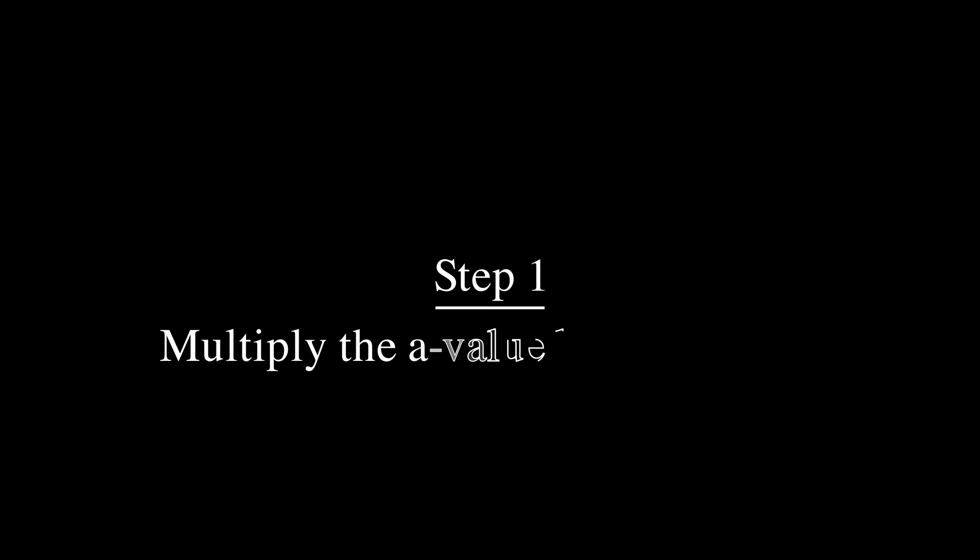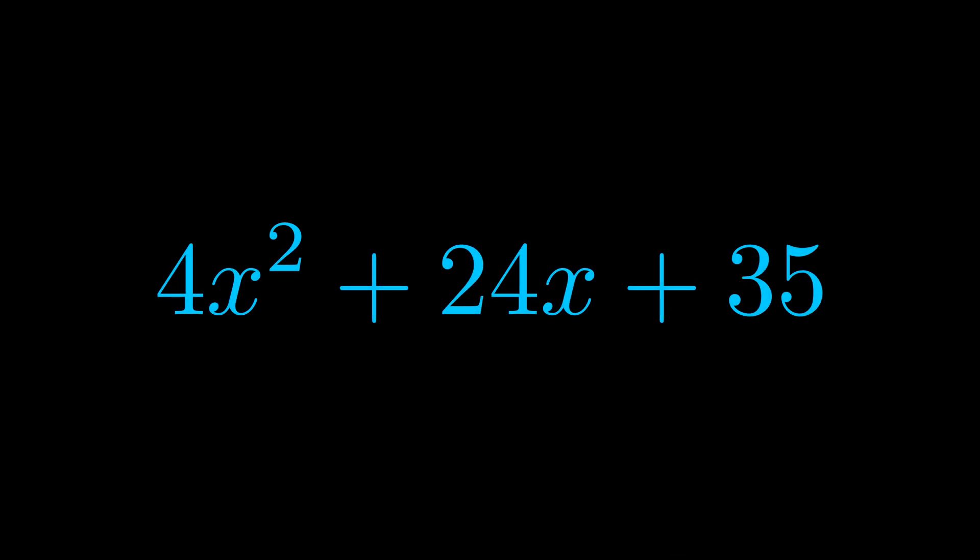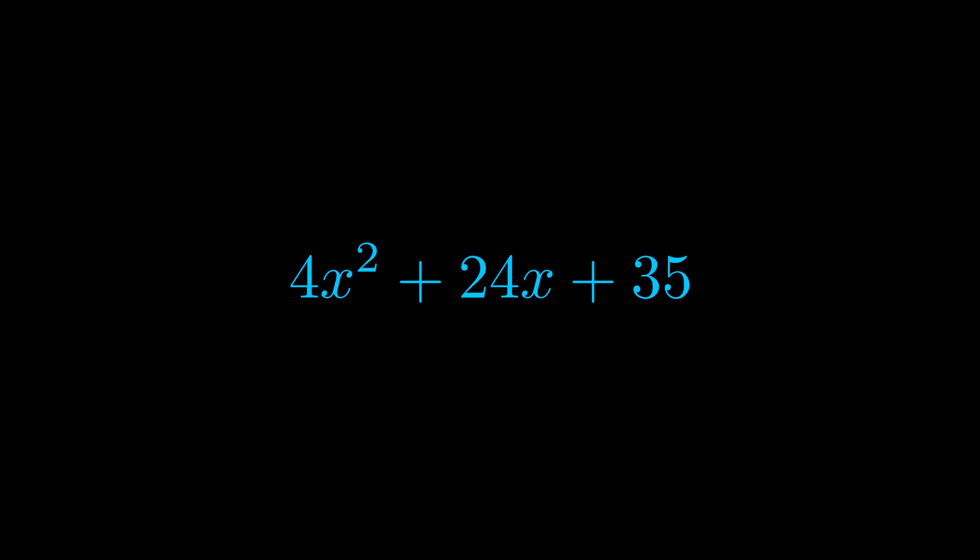Step one when factoring an equation of this form is to multiply the a value by the c value. Here we can see that our a value is the coefficient on the x squared term and our c value is the constant term.